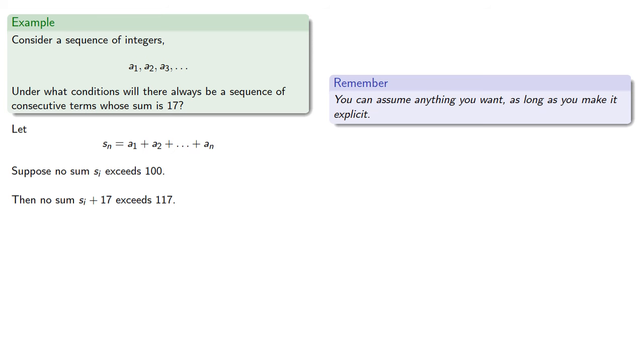And so now we want to apply the pigeonhole principle. We have 117 bins, the possible sums, and the sum plus 17. And if we take the values from s1 through s59 and the same values plus 17, there's 59 times 2, 118 values in 117 bins, so two of the values have to be the same.